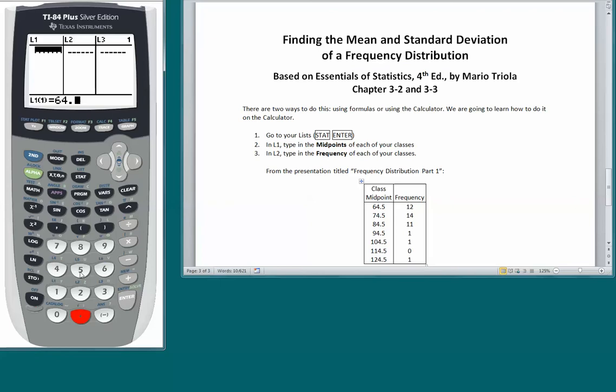There are our class midpoints and frequencies. We're going to type them in here. 64.5 is the first class midpoint. 74.5 is the next class midpoint. I made a mistake. Let's try that again. 104.5. I forgot to hit the ENTER key. ENTER. 114.5.